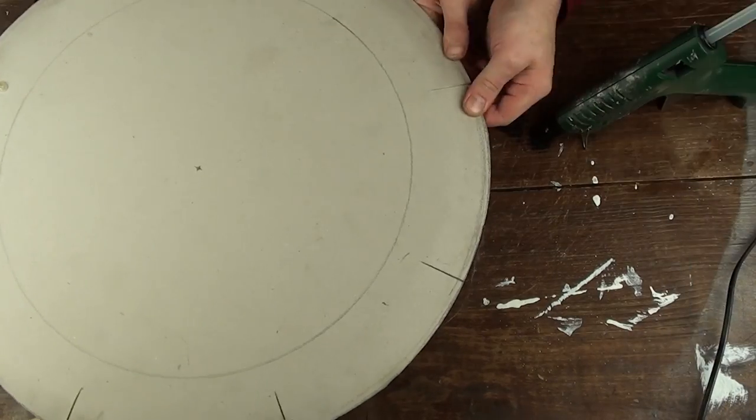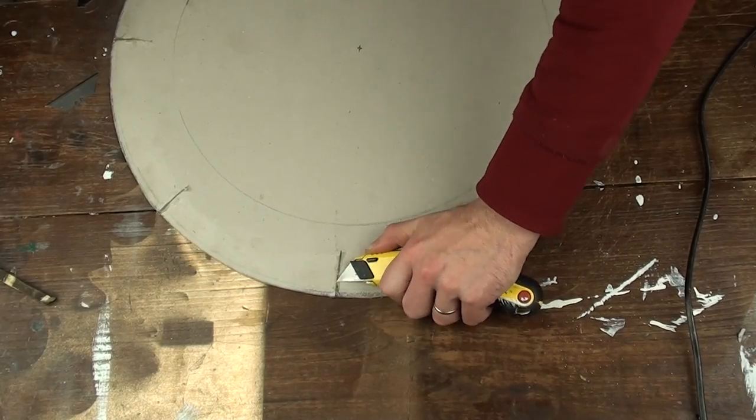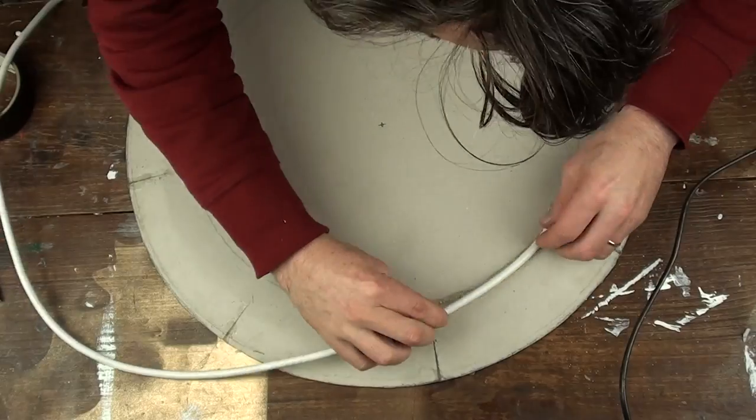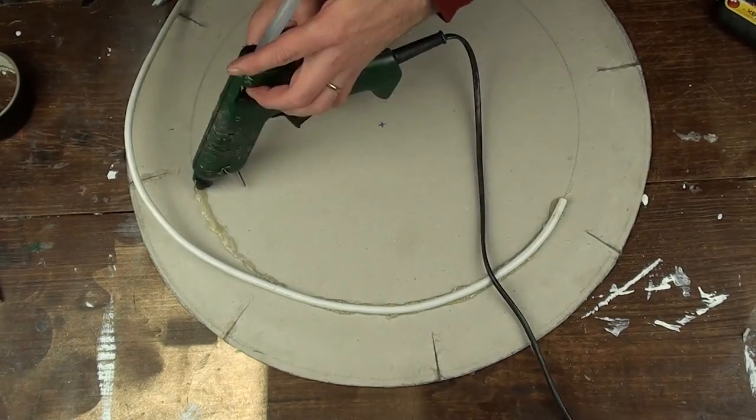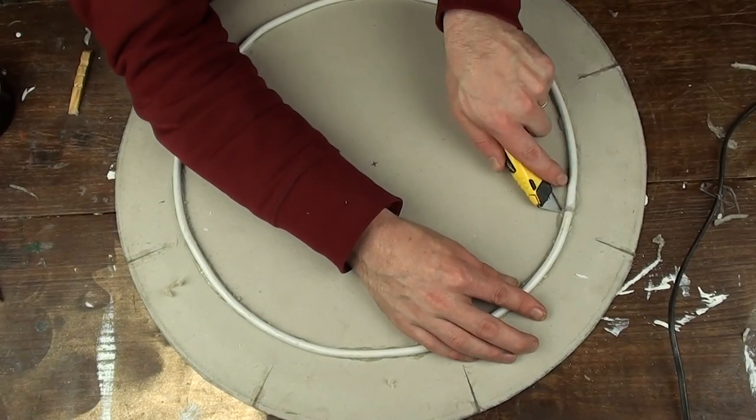Once you've added the glue, you can cut off any excess once it's dry. Now it's on to putting on the cord in the center circle. Add a liberal amount of glue. Make sure that the circle stays on the line. Keep it there. Once the glue's dry, you can cut away any excess.